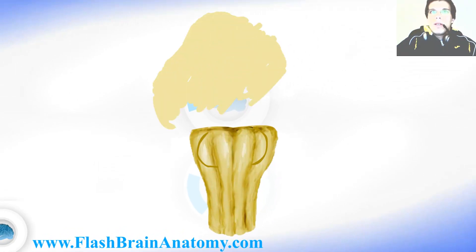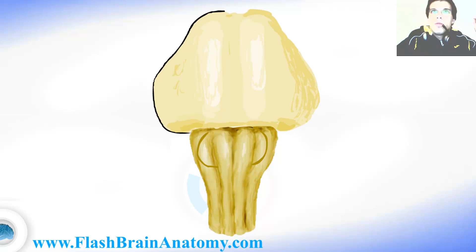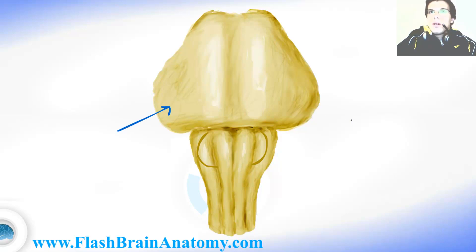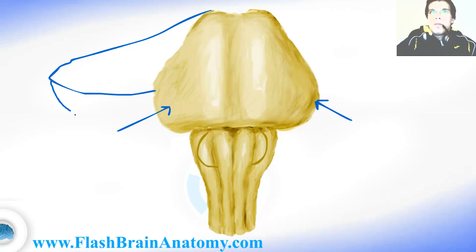Then comes the pons — in Latin it means the bridge. This part was the pons and here is the border to the medulla oblongata. On the basal side of the pons there is not much to see. These structures over here are the peduncles that connect the pons to the cerebellum.